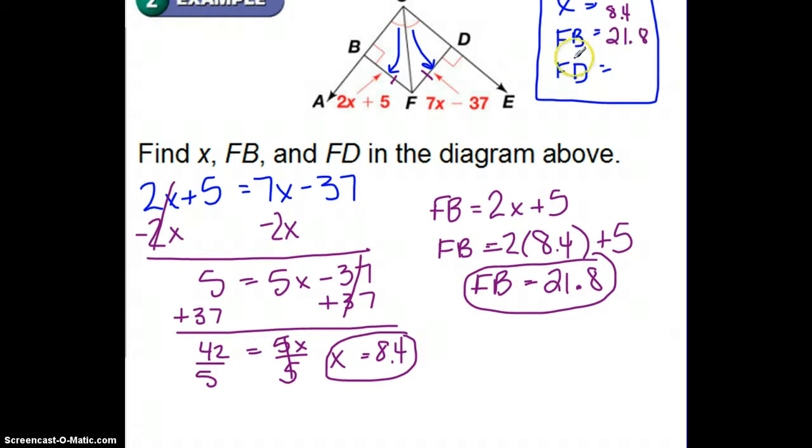We also said we knew these two had to be equal, which means this is also going to be 21.8. Now, if you're trying to remember to write something down here, FB and FD are equal because of the angle bisector theorem.